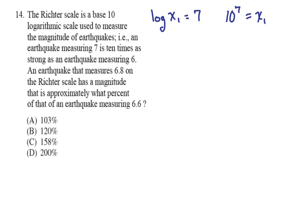So in this case, we would see the relationship that x sub 1 is 10 to the 7th power. So the logarithm is the exponent, that's 7, that raises the base, which is 10, to equal this number x sub 1. So 10 to the 7th is equal to x sub 1.